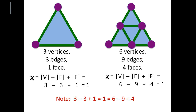For our triangle example, when we have three vertices, three edges, and one face, we do three minus three plus one, so the Euler characteristic of the triangle is one. Notice that when we subdivide the triangle, we still get an Euler characteristic of one: six vertices minus nine edges plus four faces still gives us an Euler characteristic of one.